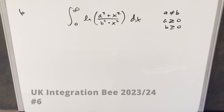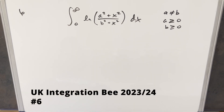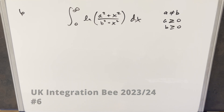We've written a pretty interesting integral. This one's from the UK integration bee, 2023-24, problem 6. We have the integral from 0 to infinity of natural log of (a squared plus x squared) over (b squared plus x squared) dx.